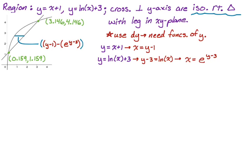So that little segment that I drew before that's perpendicular to the y axis is going to be the leg of the triangle. So the base is that thing we worked out. It's y minus 1 minus e to the y minus 3. The height since this is isosceles is exactly the same. So it's also that.